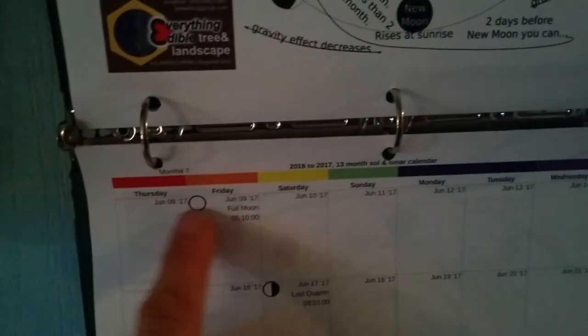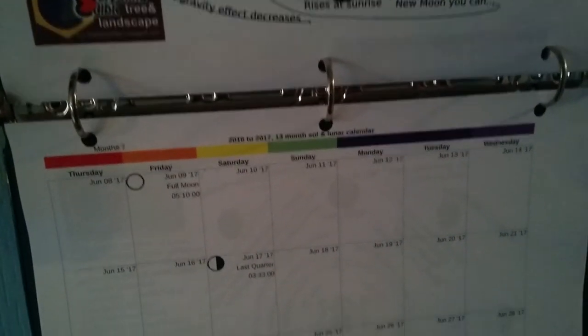So I've got at the top of the calendar, Thursday, Friday, Saturday, and so on. And I've also used colors, seven colors of the rainbow.